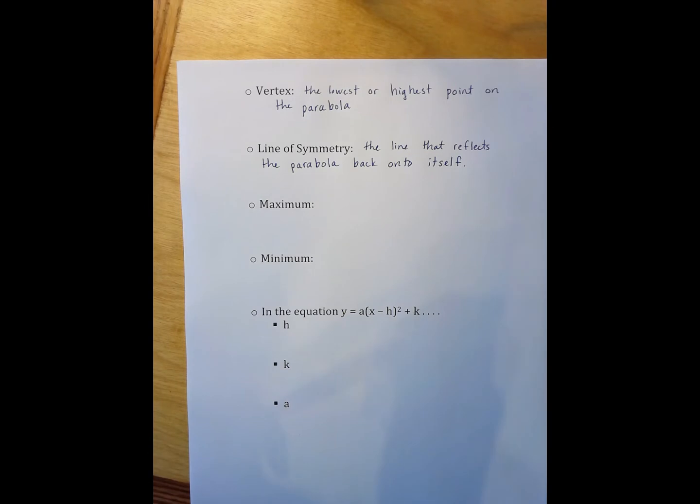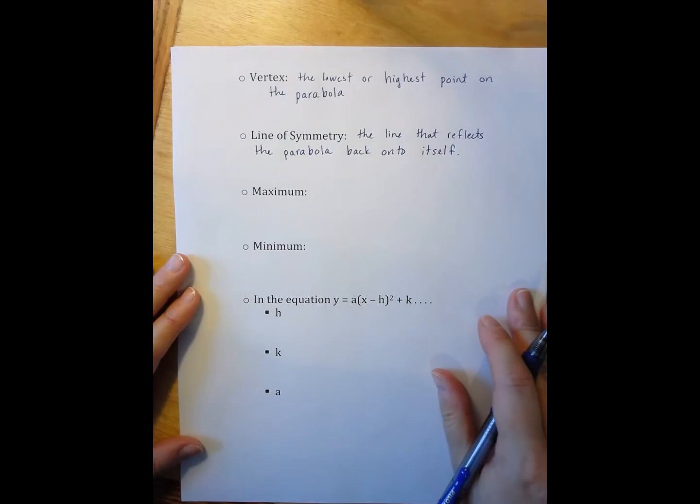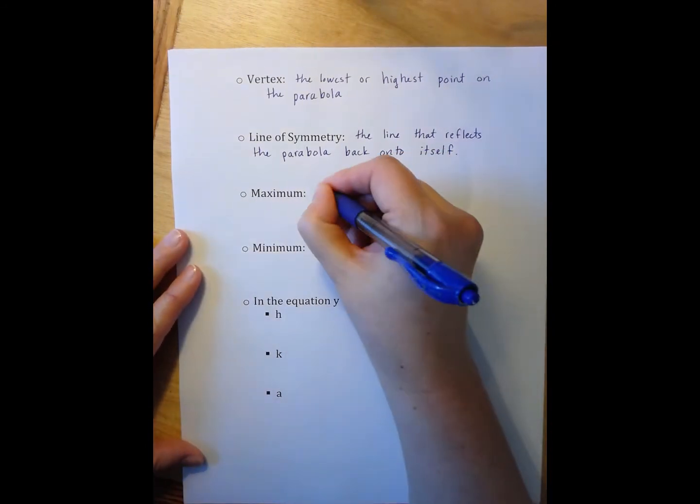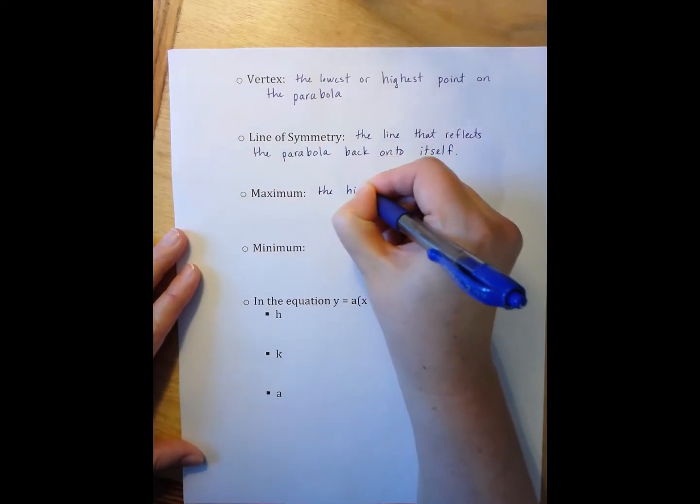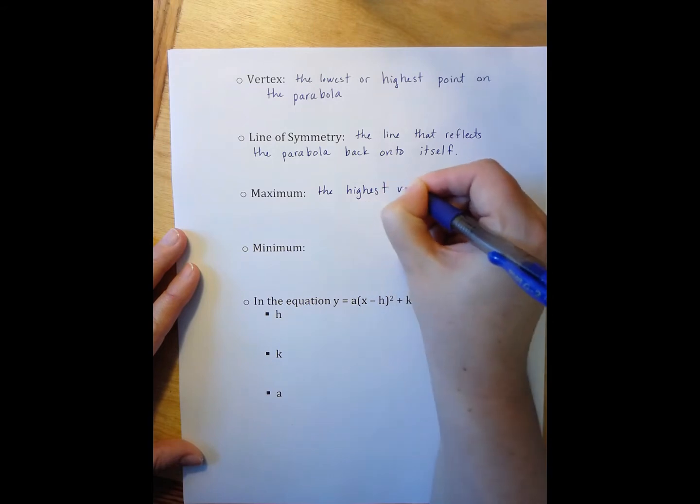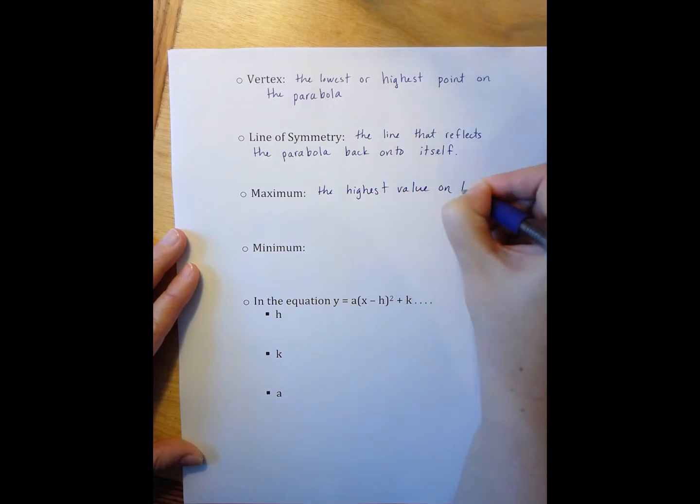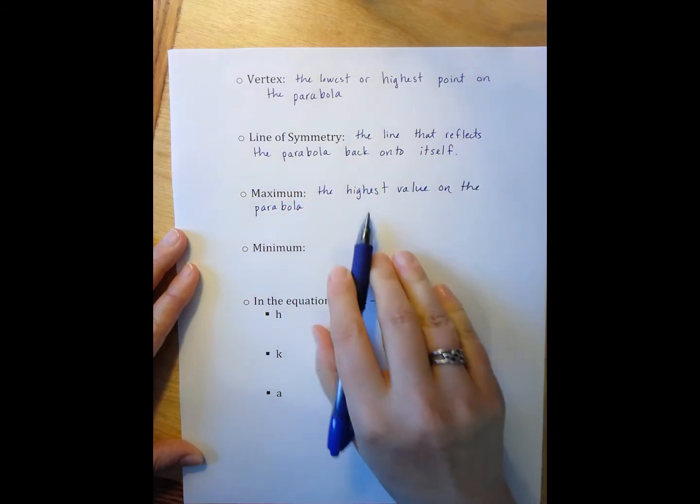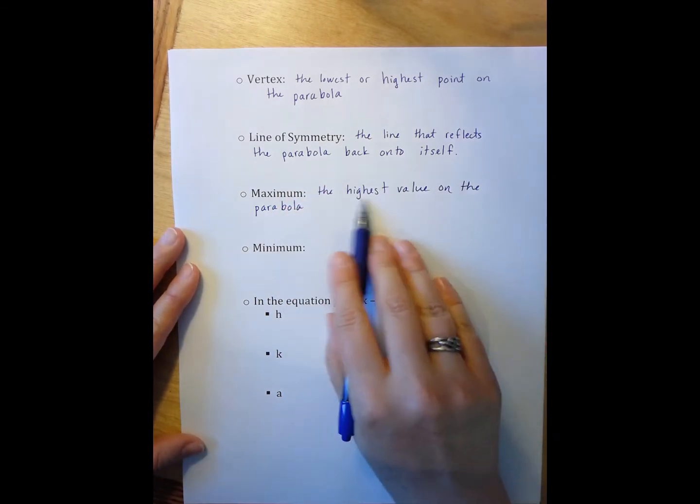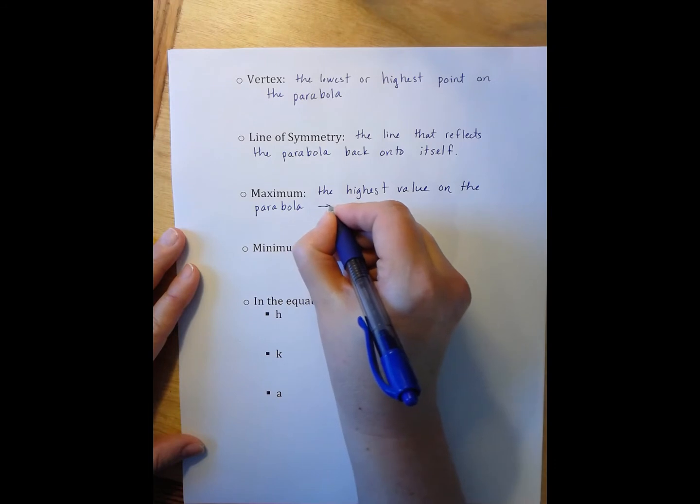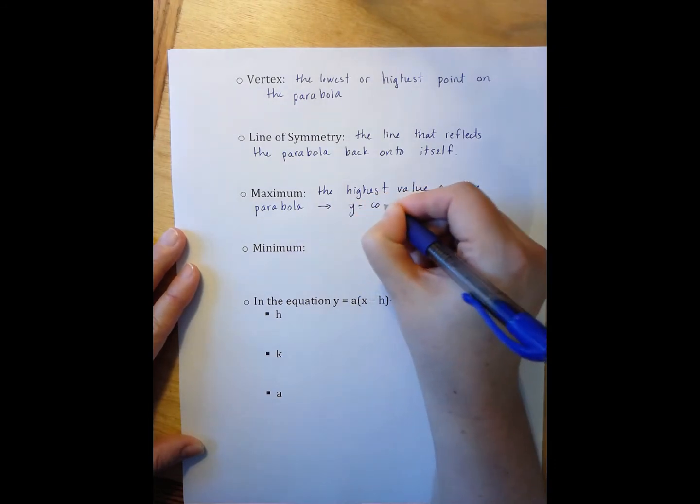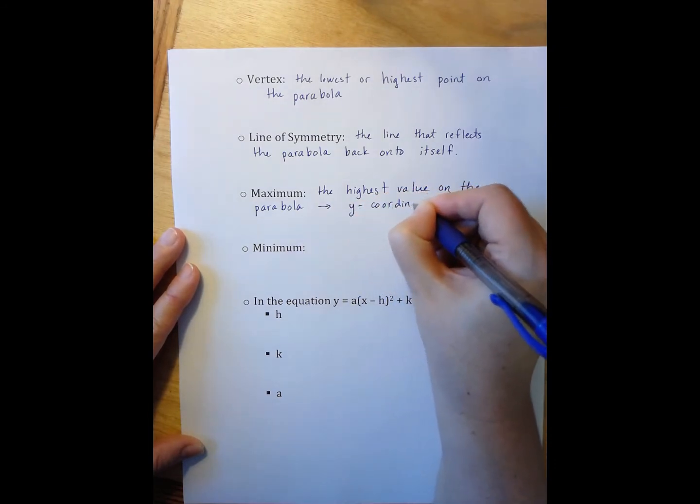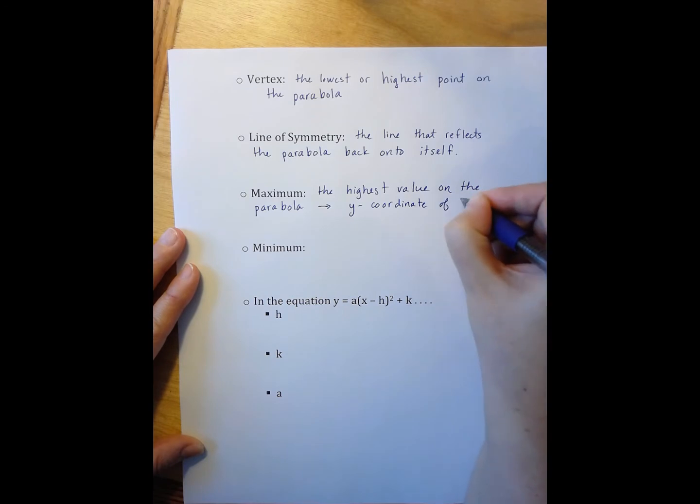Maximum and minimum go back to the vertex with one small caveat, which is that the maximum value is the highest value on the parabola. And I want you to note that the value and highest means that this is the y-coordinate of the vertex.